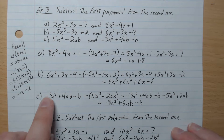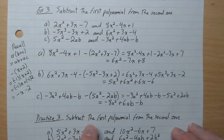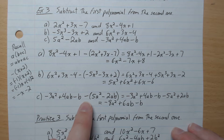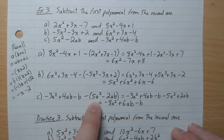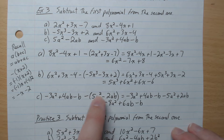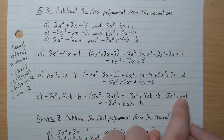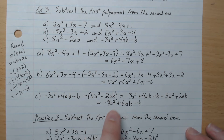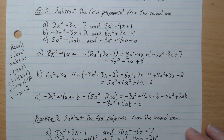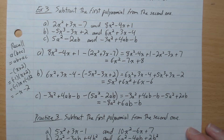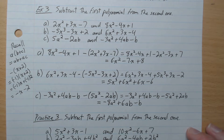Example C: first from the second — our setup has the second minus the first. Distributing the negative gives minus 5a squared and plus 2ab. Collecting a squared terms: negative 8a squared. Collecting ab terms: plus 6ab. And then negative b on its own.